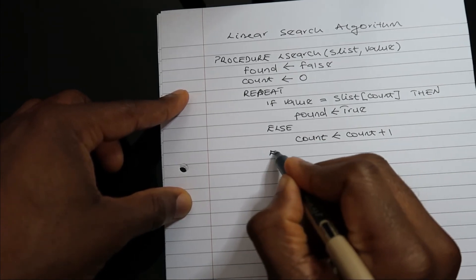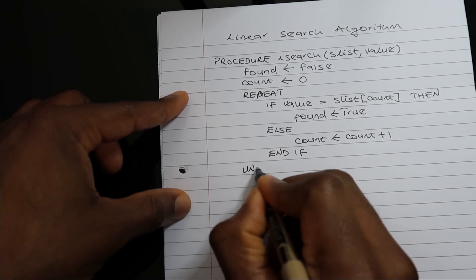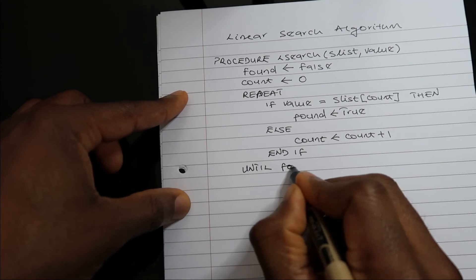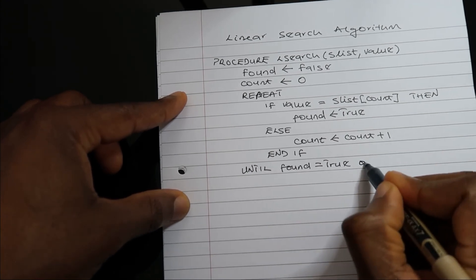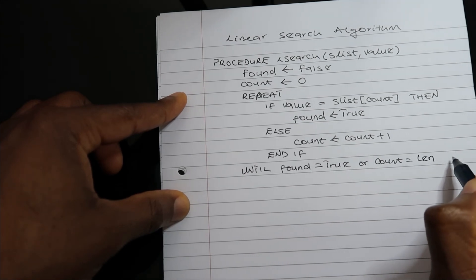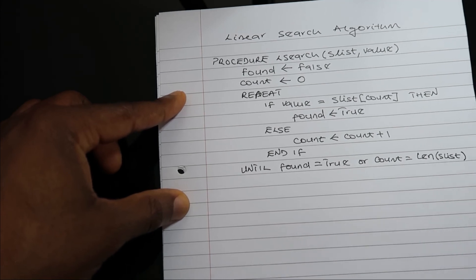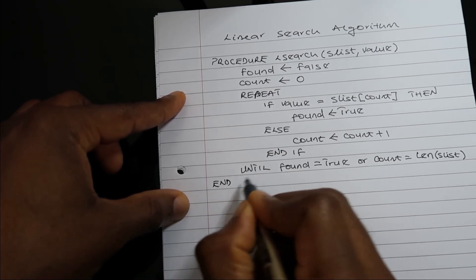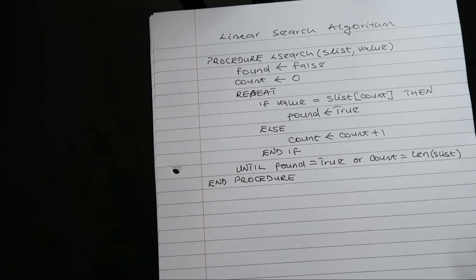We repeat this until 'found' is equal to true, or until count equals the length of s_list. Then we end the procedure. So this is the algorithm for linear search — thank you.